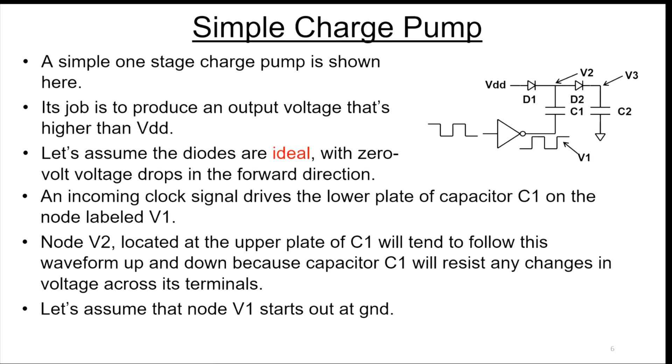A simple one-stage charge pump is shown here, and its job is to produce an output voltage that's higher than VDD. For now, let's just assume all these diodes are ideal. By ideal, I mean there's no voltage drop in the forward direction, infinite breakdown, no leakage current. Perfect one-way valves.